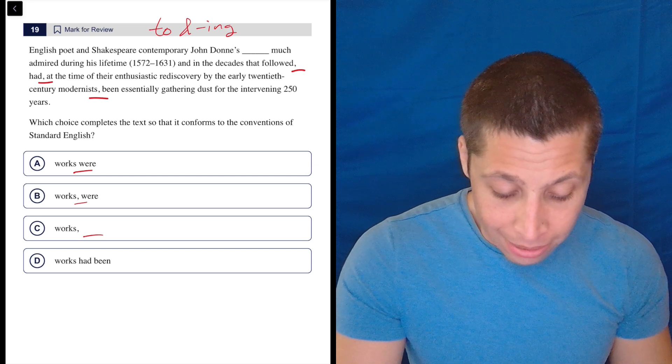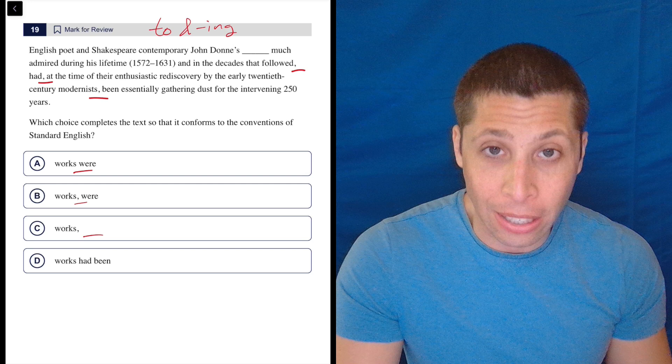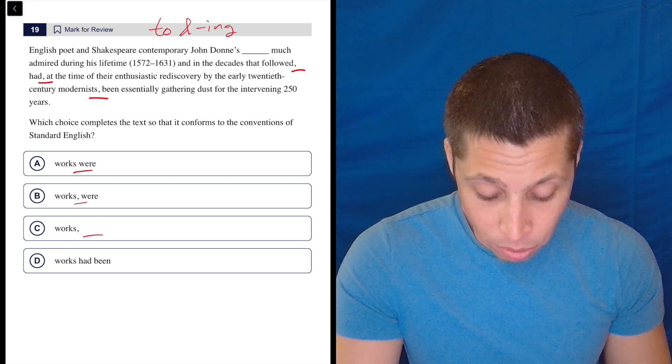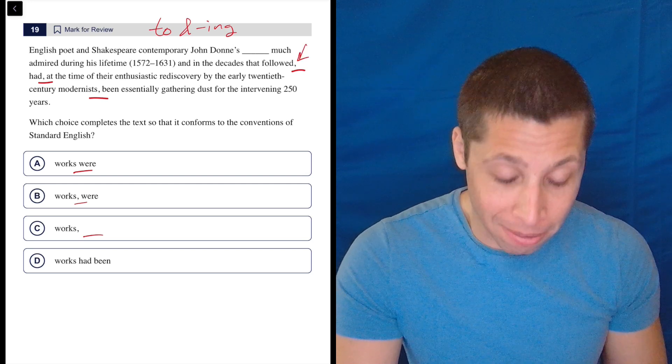So let's take a look. English poet and Shakespeare contemporary John Donne's works were much admired during his lifetime and in the decades that followed. Yeah, sounds great. But that's not the sentence because it doesn't end here. That's a comma. So what's happening?